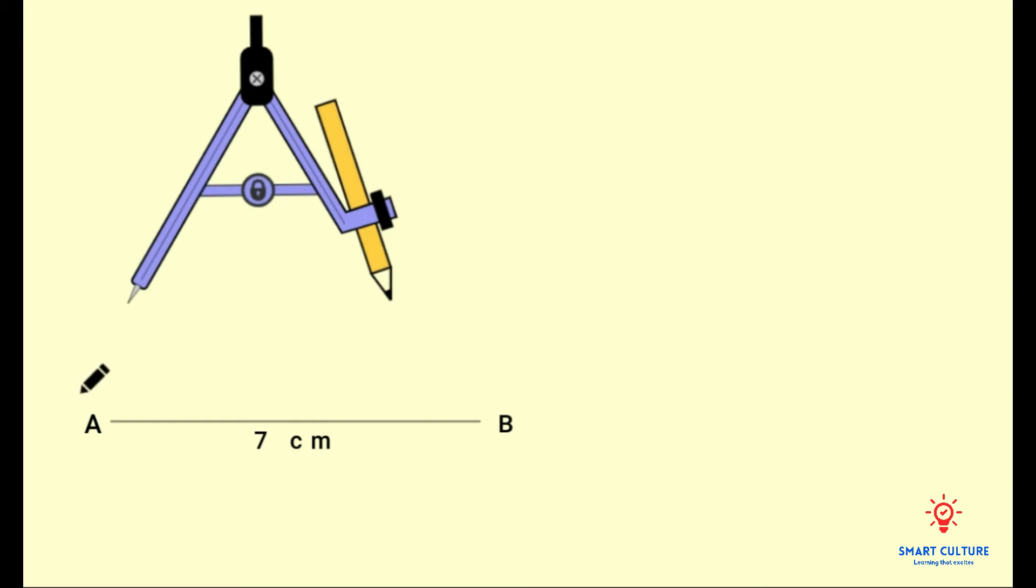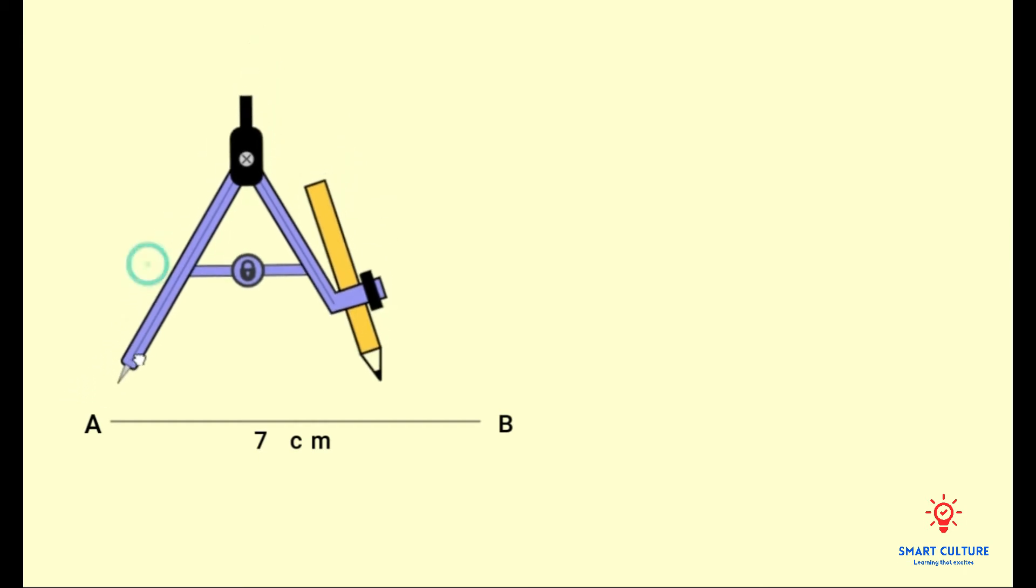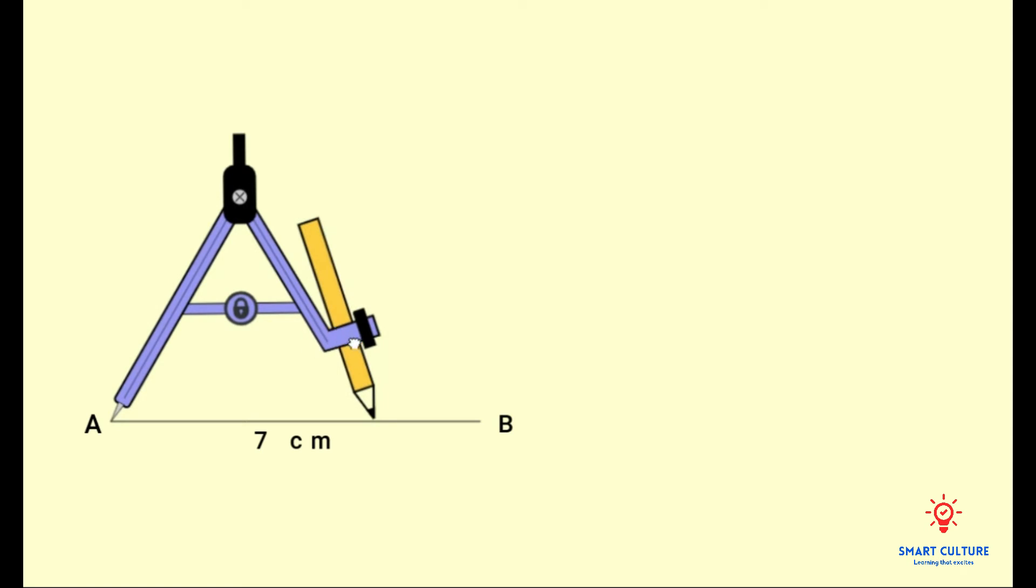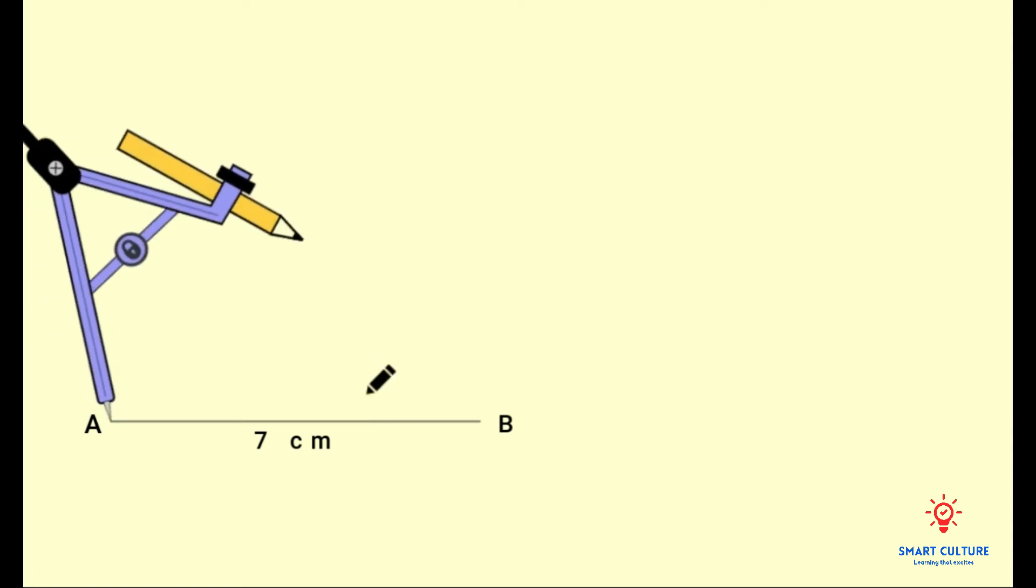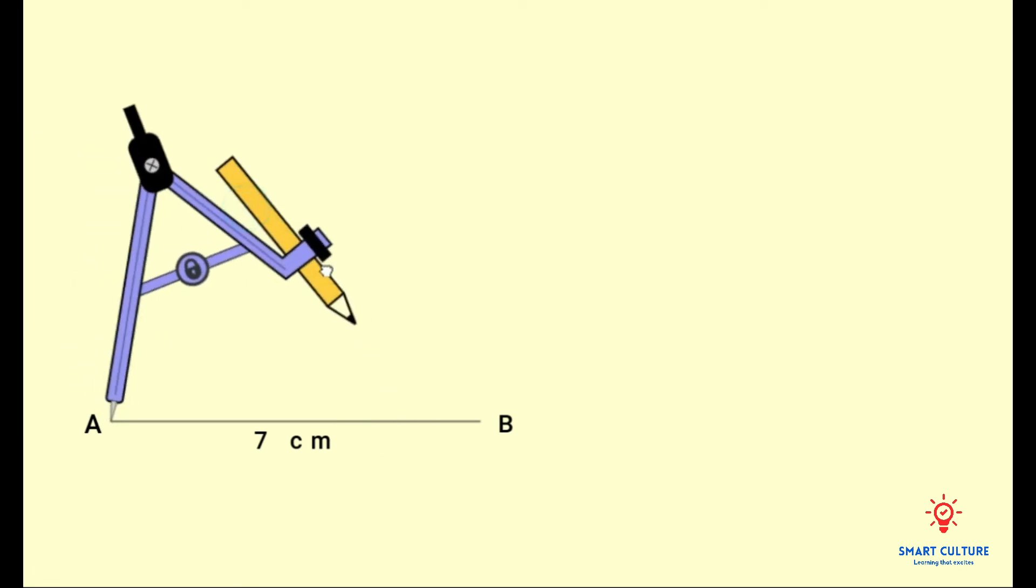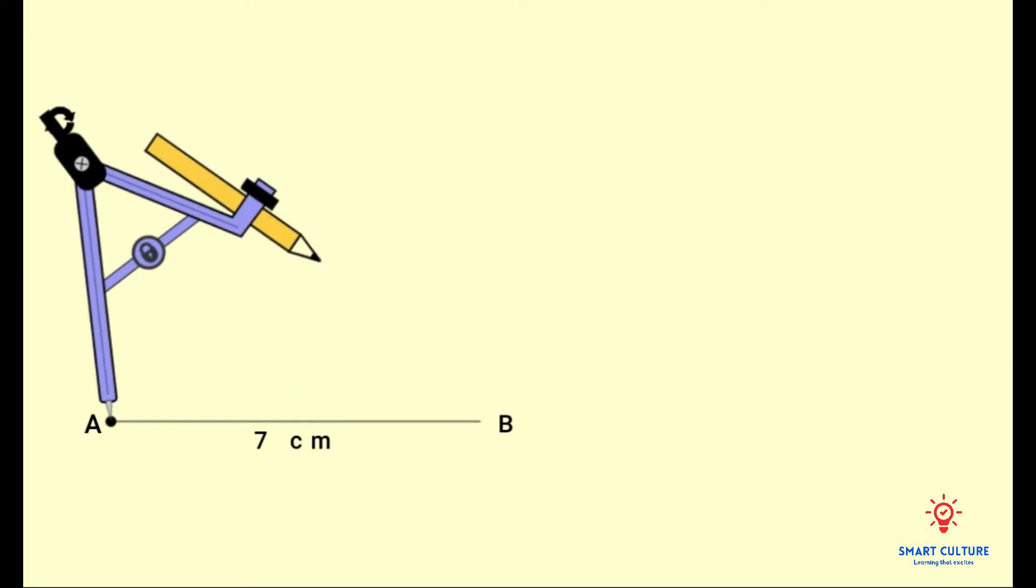The next thing that you have to do is draw an arc five centimeters away from point A. The third vertex of the triangle will be somewhere along this arc.